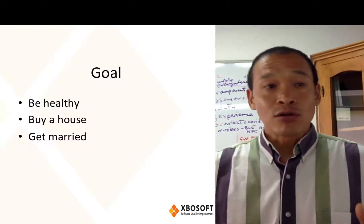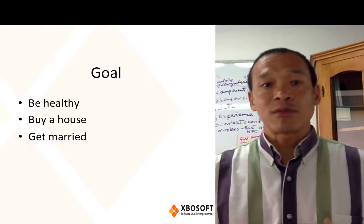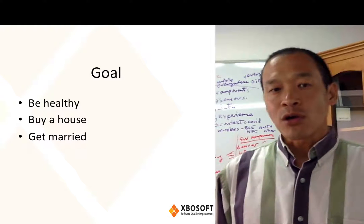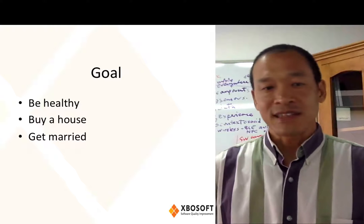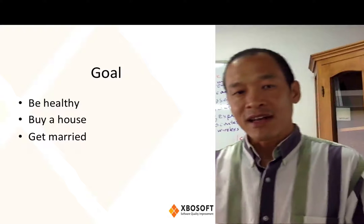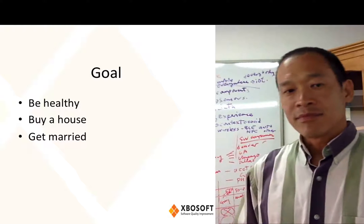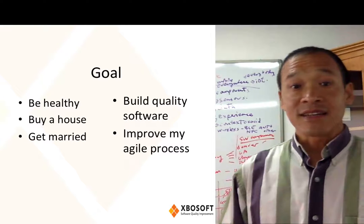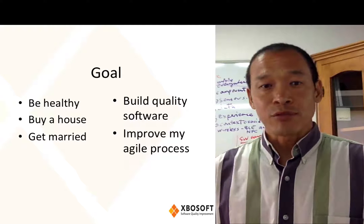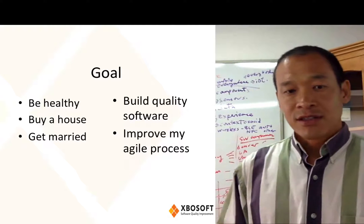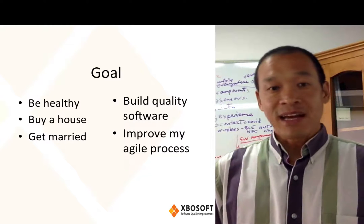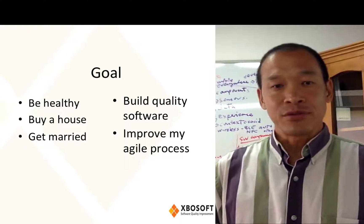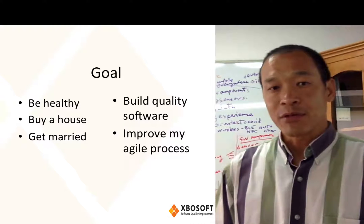First let's talk about goals. I'm going to give you some examples from a personal standpoint. I could have a goal of being healthy, a goal of buying a house, or getting married. And then if we think about it in technical terms, how about goals like building quality software or improving my Agile process? I'm going to carry this analogy all the way through so you can see how we can apply GQM to every part of our lives.